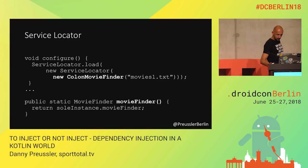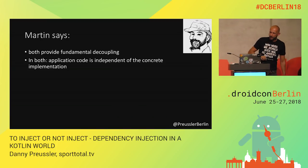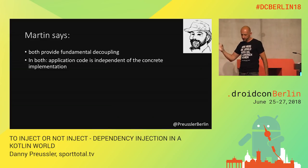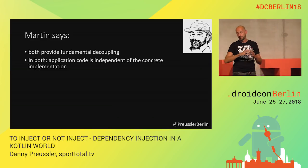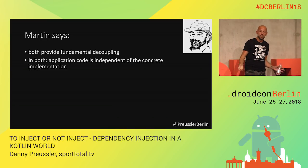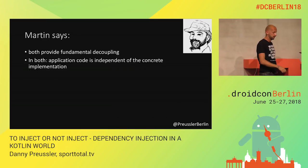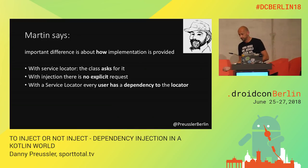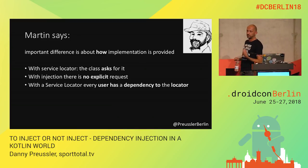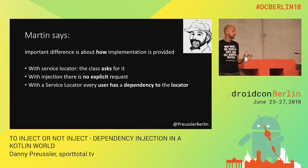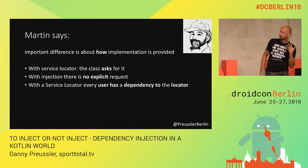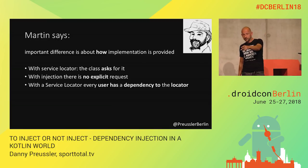Martin summed it up like this: both provide the same fundamental decoupling. Both variations — application code is independent of the concrete implementation. But there's a fundamental difference: how you use it. With the service locator, the class asks for it. While with injection, there's no explicit request. That's why dependency injection is often explained as following the Hollywood rule: 'Don't call us, we call you.'